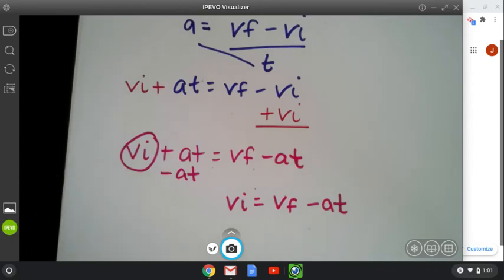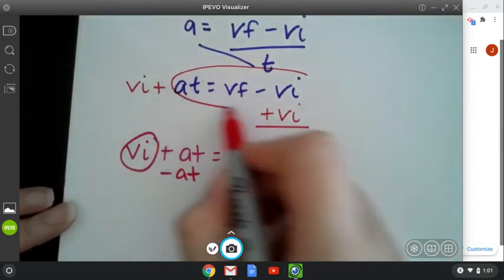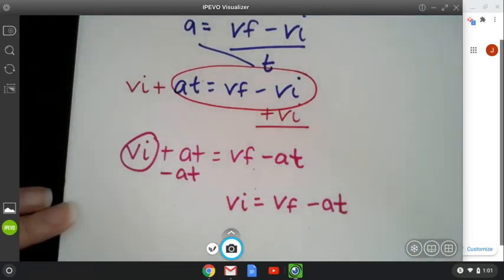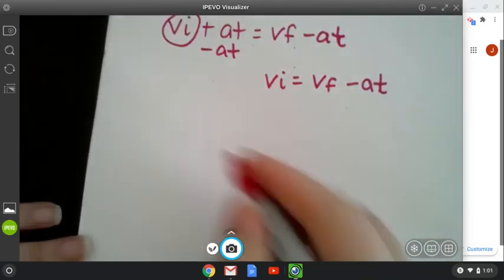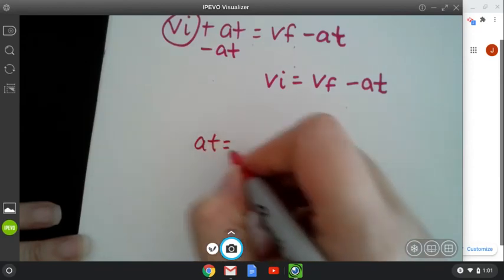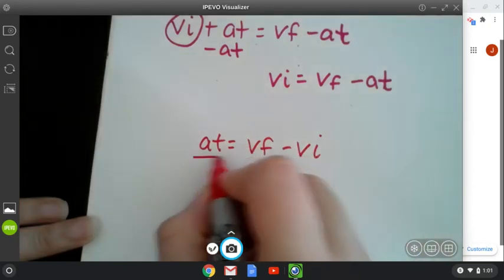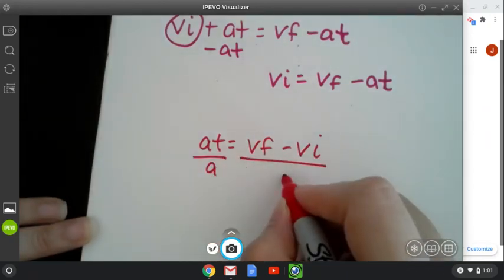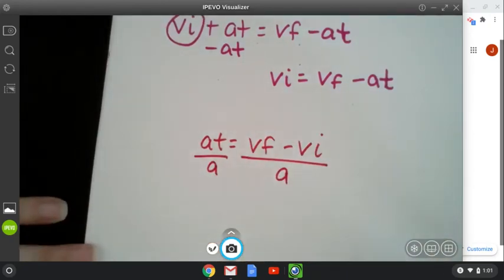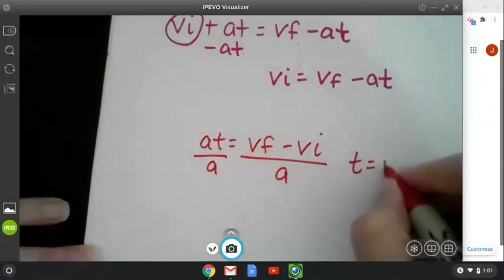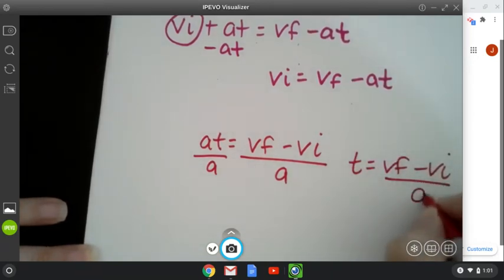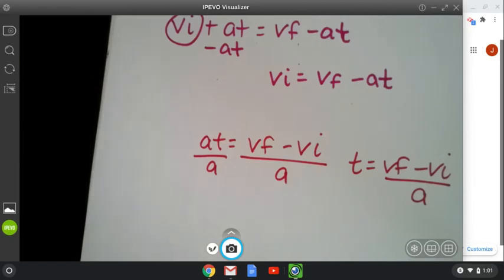So for that, I'm actually going to start here. I've already done the first step. So I'm going to rewrite that at the bottom. So I have at equals vf minus vi. I want t by itself. So I'm going to divide a. So my equation for time is going to be t equals vf minus vi over a for acceleration. So that's my equation for acceleration. Acceleration will be one of the things that we do relatively quick.